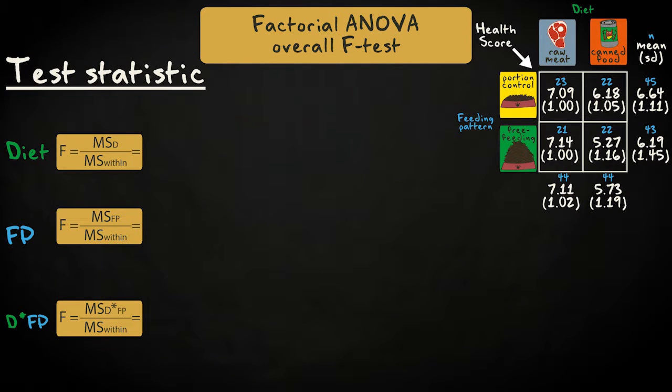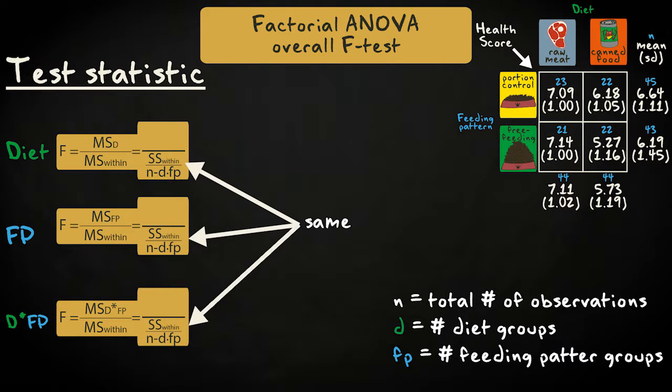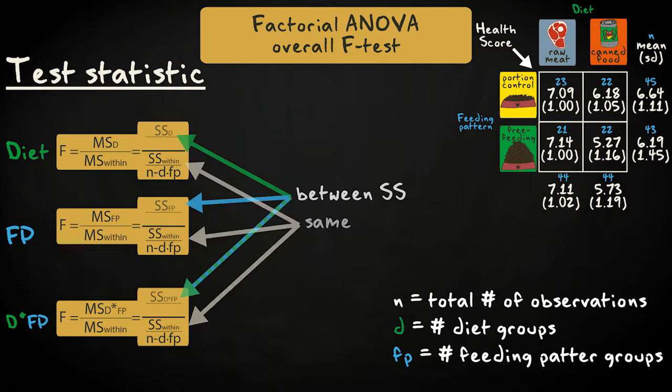For each effect, the test statistic F equals the between-group variance divided by the within-group variance. The within-group variance is the same for all effects. It's calculated by dividing the within or error sum of squares by the total number of observations minus the total number of groups. The between-group variance is calculated using the sums of squares relevant to the particular effect and dividing by the appropriate degrees of freedom.